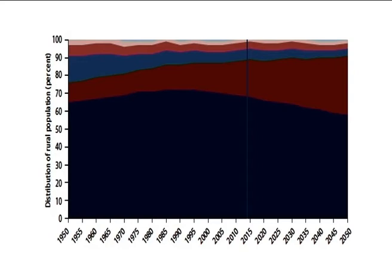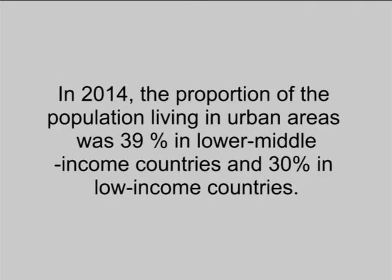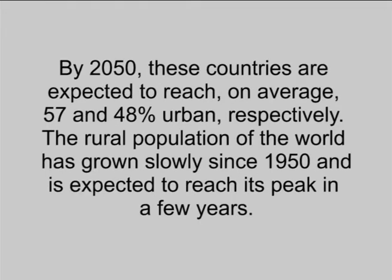Nevertheless, this group of countries is expected to experience faster urbanization than others in the coming decades. In 2014, the proportion of the population living in urban areas was 39% in lower middle-income countries and 30% in low-income countries. By 2050, these countries are expected to reach on average 57% and 48% urban respectively. The rural population of the world has grown slowly since 1950 and is expected to reach its peak in a few years.